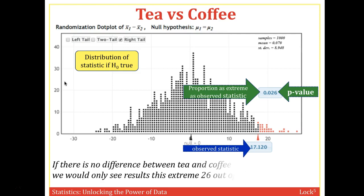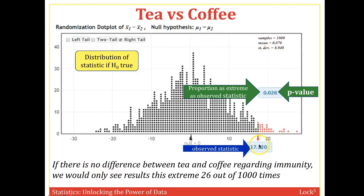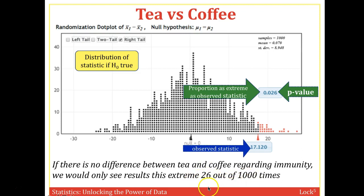The p-value is 0.026. So if there is no difference between tea and coffee regarding immunity, we would only see results this extreme 26 out of 1,000 times, or a proportion of 0.026. The question is whether that is too unlikely for you, or whether you think it's probable via random chance.